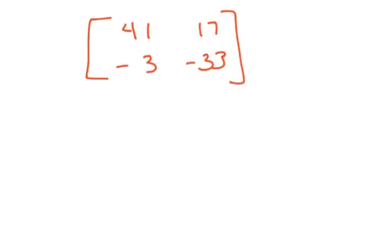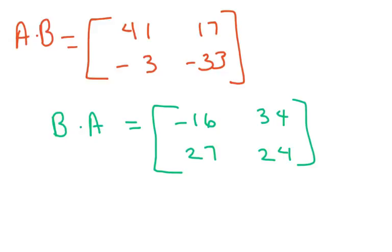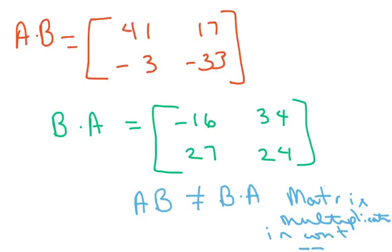I suggest you keep practicing. Try multiplying B times A — what you should get is negative 16, 27, 34, and 24. So A times B does not equal B times A. That means matrix multiplication is not commutative.